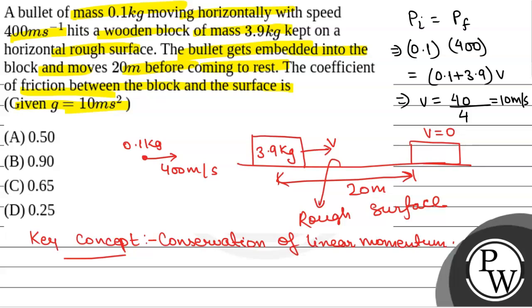Now if we assume the coefficient of friction of this rough surface is mu, so the deceleration of the block will be equal to mu mg because this is the frictional force mu mg by mass of block that is m. So that will be equal to mu g.